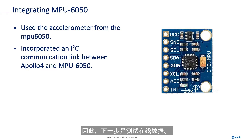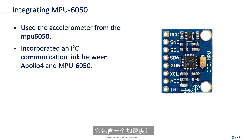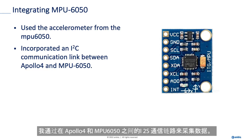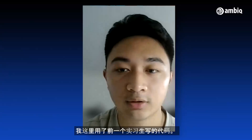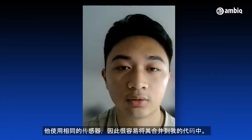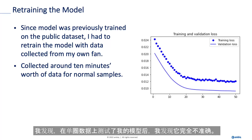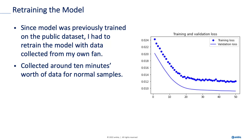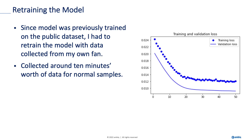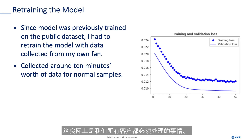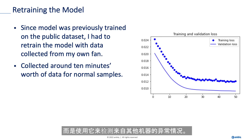The next step was to test it on live data. I used a sensor called MPU6050, which contained an accelerometer, and collected data using an I2C communication link between the Apollo 4 and the MPU — using code that the previous intern, Rohan, had written. What I found was that after testing on live data, the model was completely inaccurate. The reason is that the fan I used was completely different from the fan the public dataset had used. This is something customers would have to deal with as well — they would need to collect data from their own machine and retrain the model with that data.